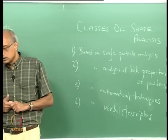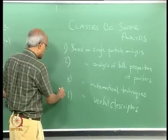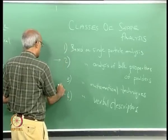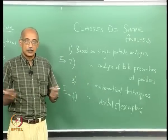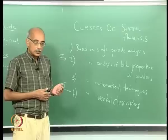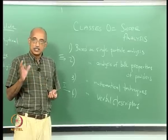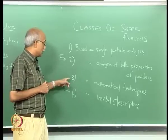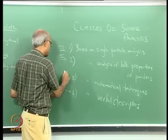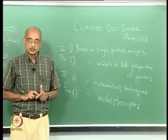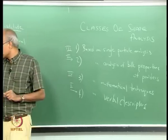Obviously the easiest class is verbal descriptors, followed by bulk properties analysis. It is always more convenient to estimate shape by looking at how an entire powder behaves — for example, mixing it in a fluid, letting it flow, and looking at the flowability, which can tell you a lot about the shape distribution. Single particle analysis is third in complexity, and mathematical techniques require the most complex analysis. These techniques can be further sub-categorized.